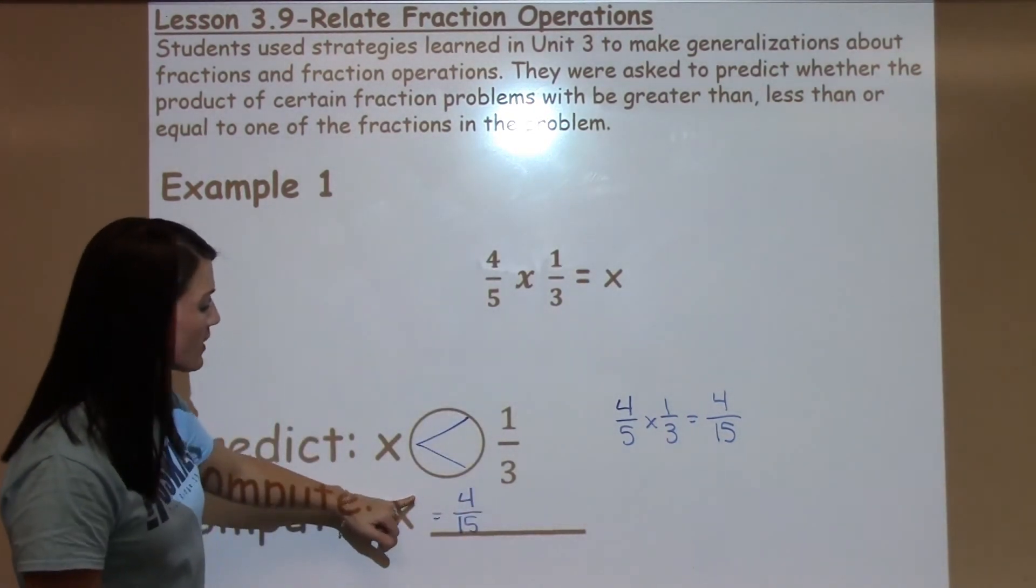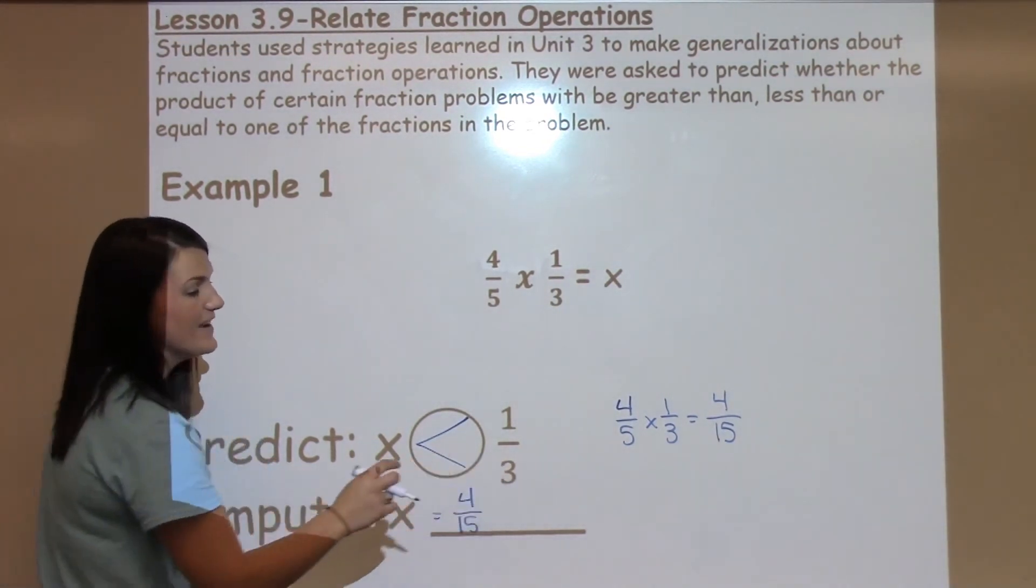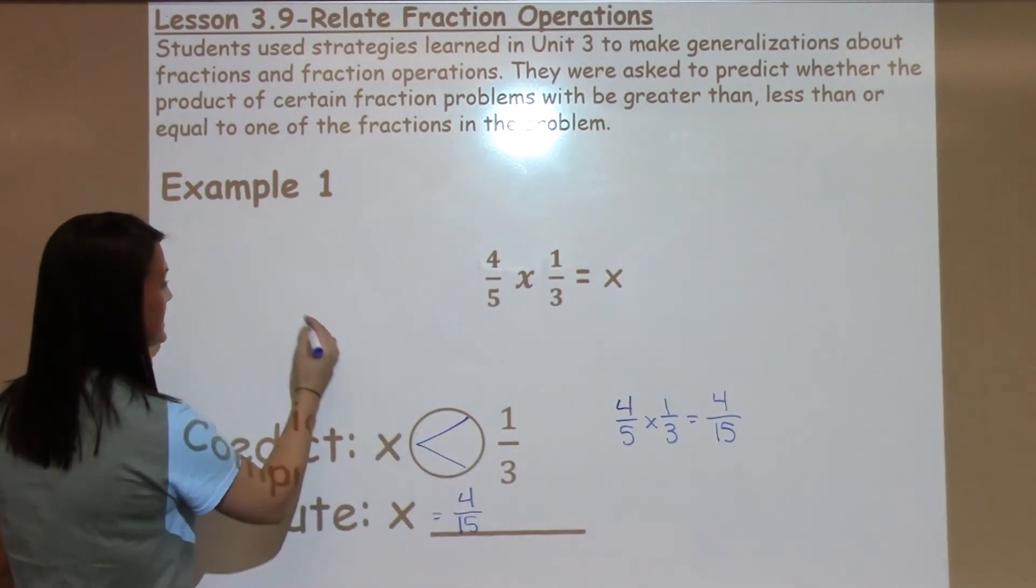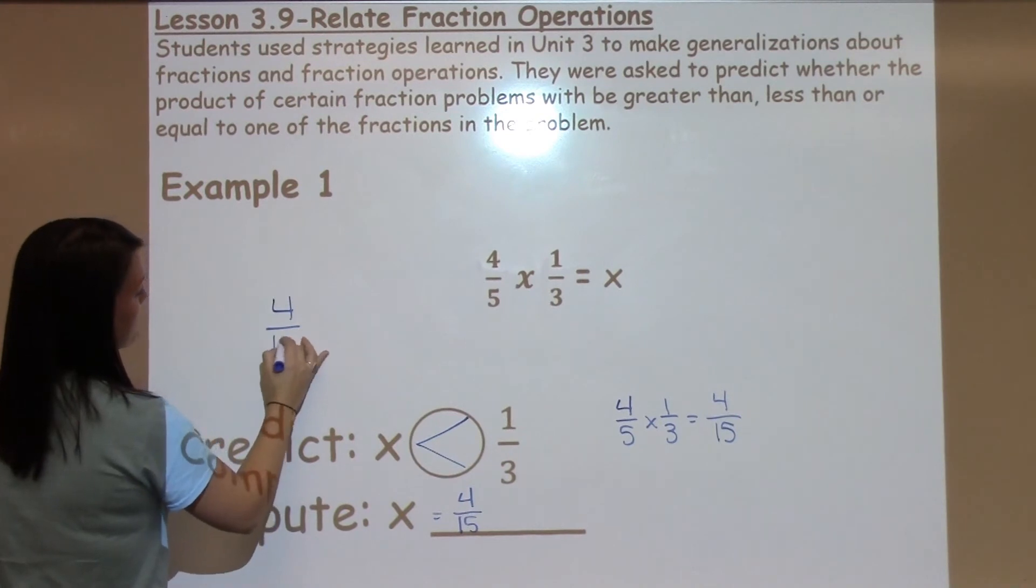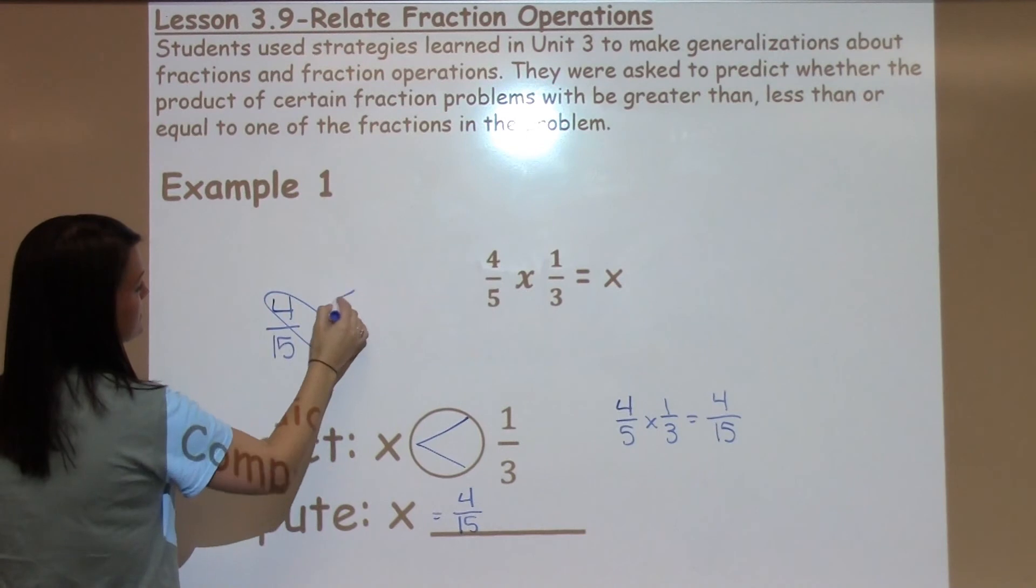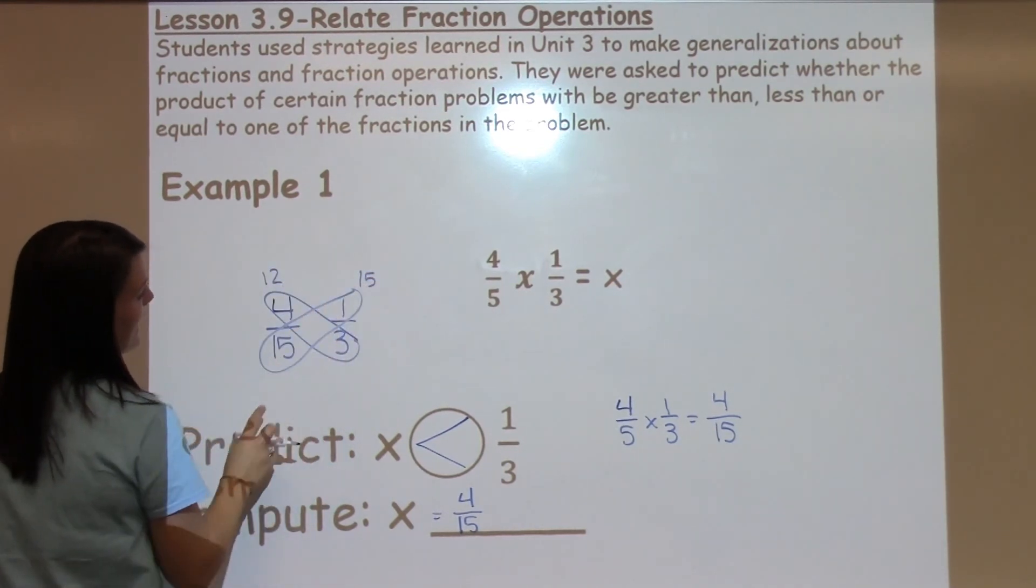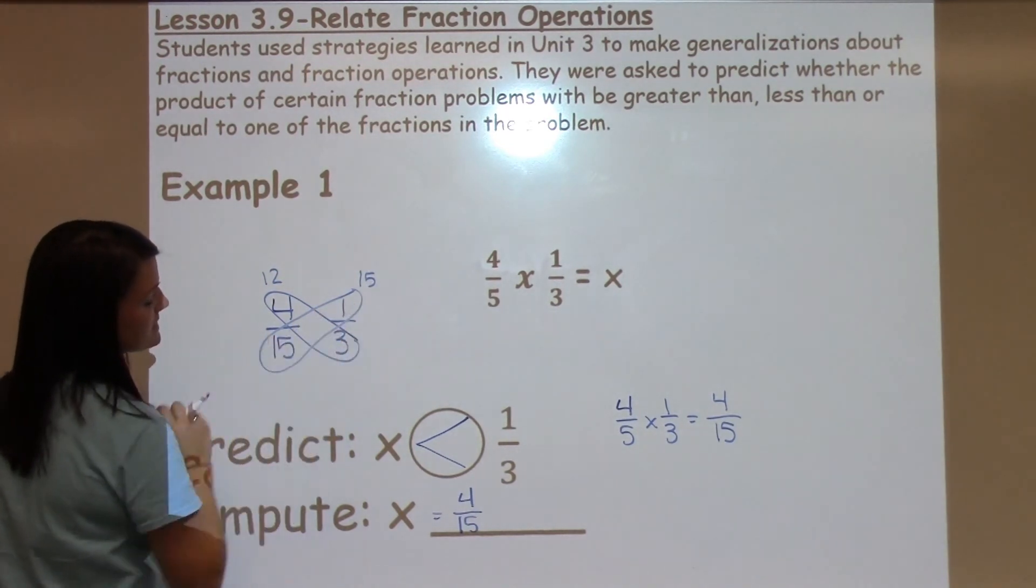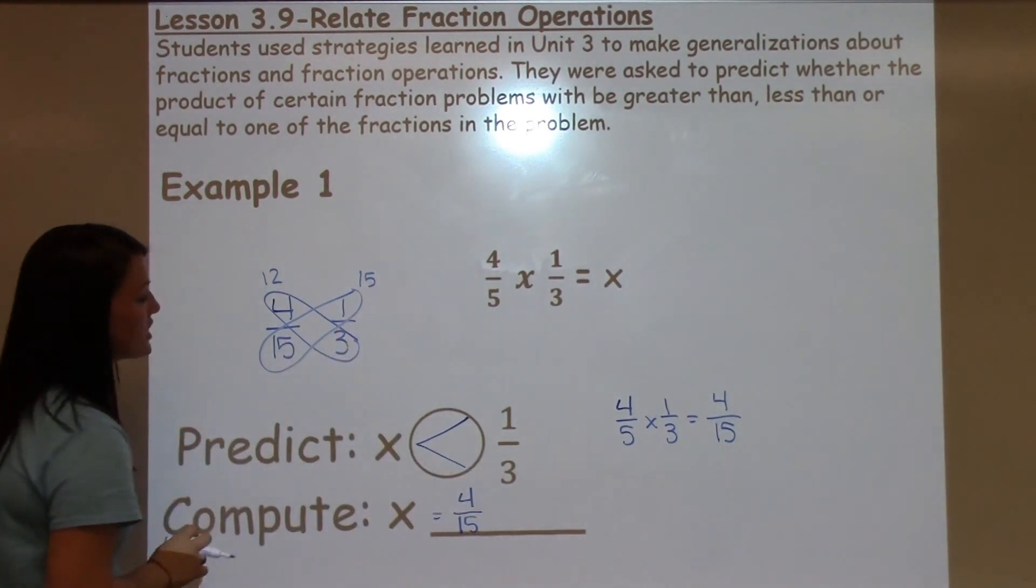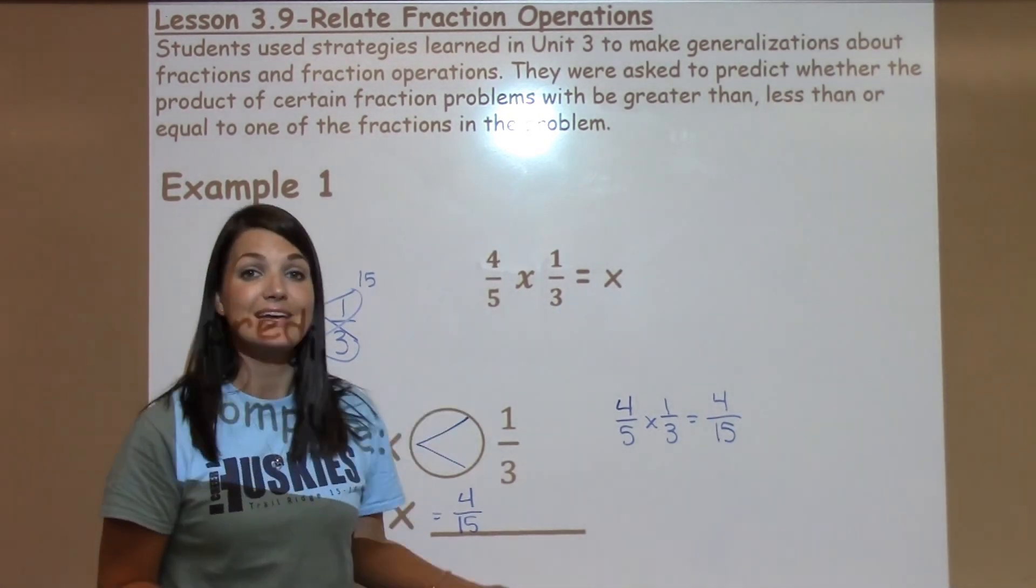So, now that I have my answer 4 15ths, I can check and make sure that my prediction was correct by comparing these two. If it's not obvious to your student right away that yes, 1 third is bigger than 4 15ths, they can always use the butterfly method to compare which they learned in unit 1, where they crisscross the top and the bottom denominators, multiply, and whichever larger number is closer to the fraction, that's the larger fraction. And, indeed, my prediction was correct. 1 third is just a little bit larger than 4 15ths, and so my answer, when I multiply these two fractions, is smaller.